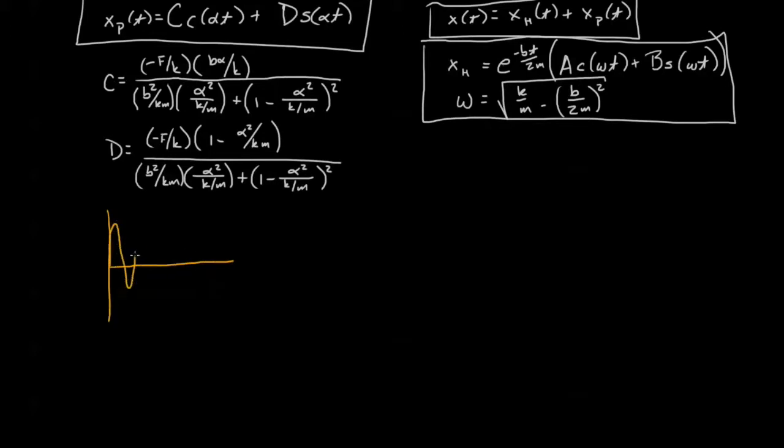So this corresponds to F being zero. We know that there's three main examples of this. The first one is underdamped, so in this case we have F equals zero, and B squared is less than 4km. We'll call this scenario one.